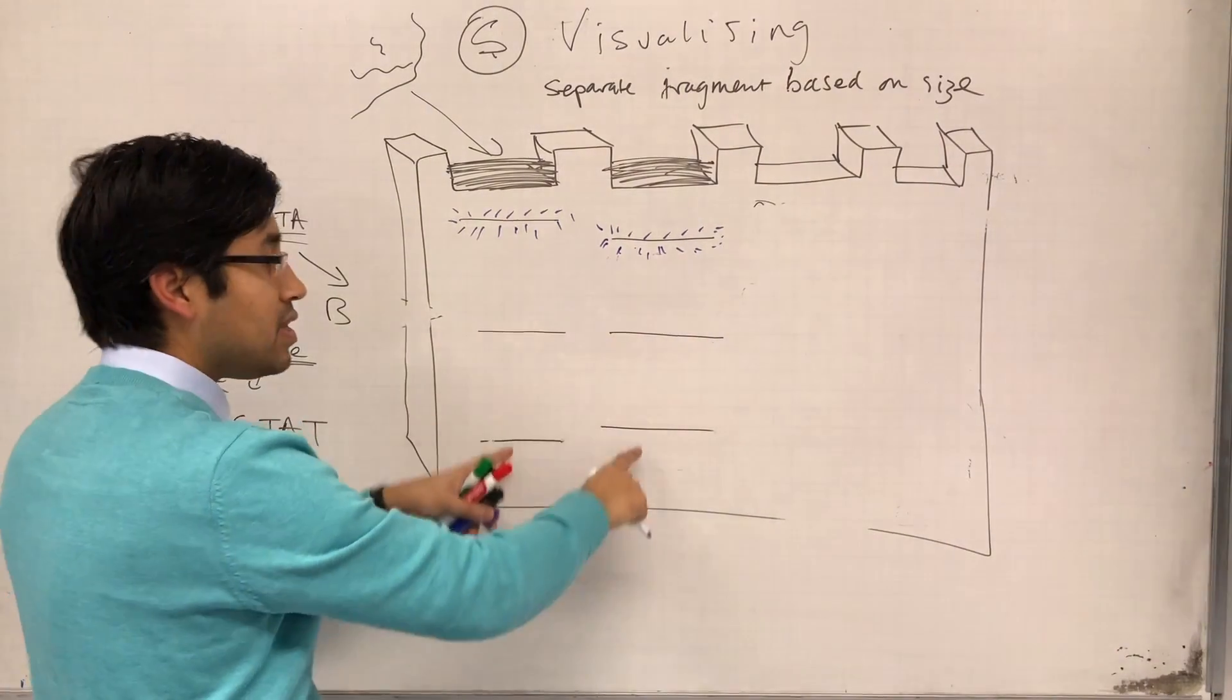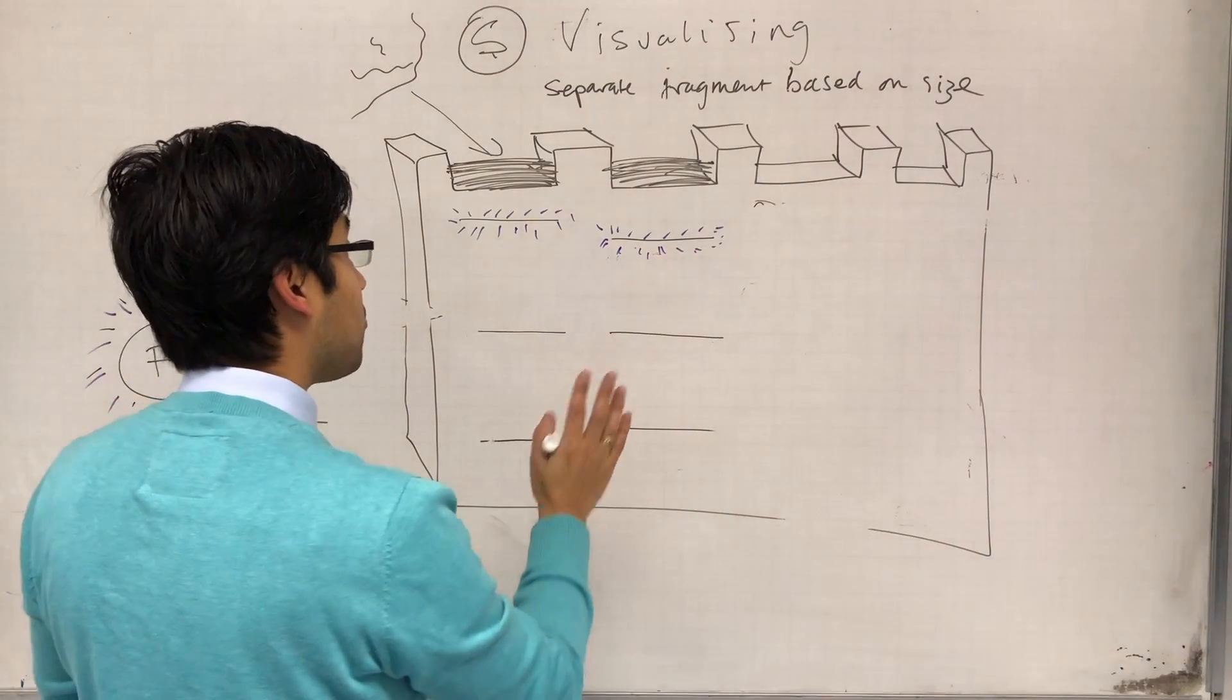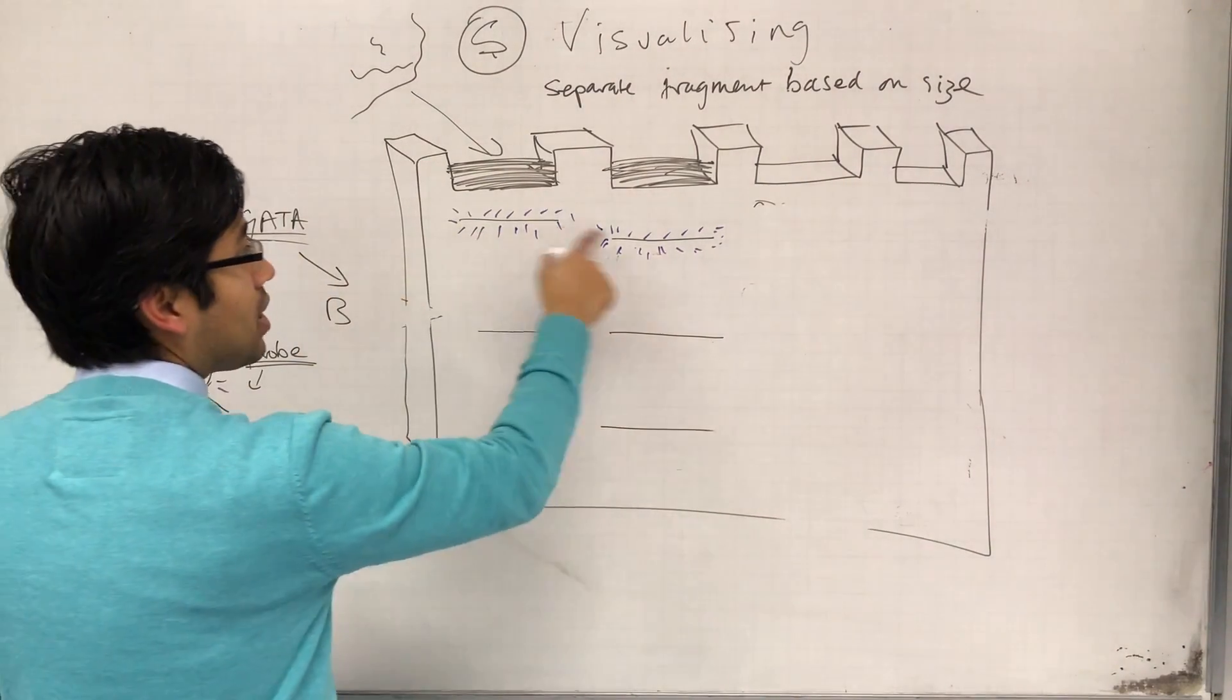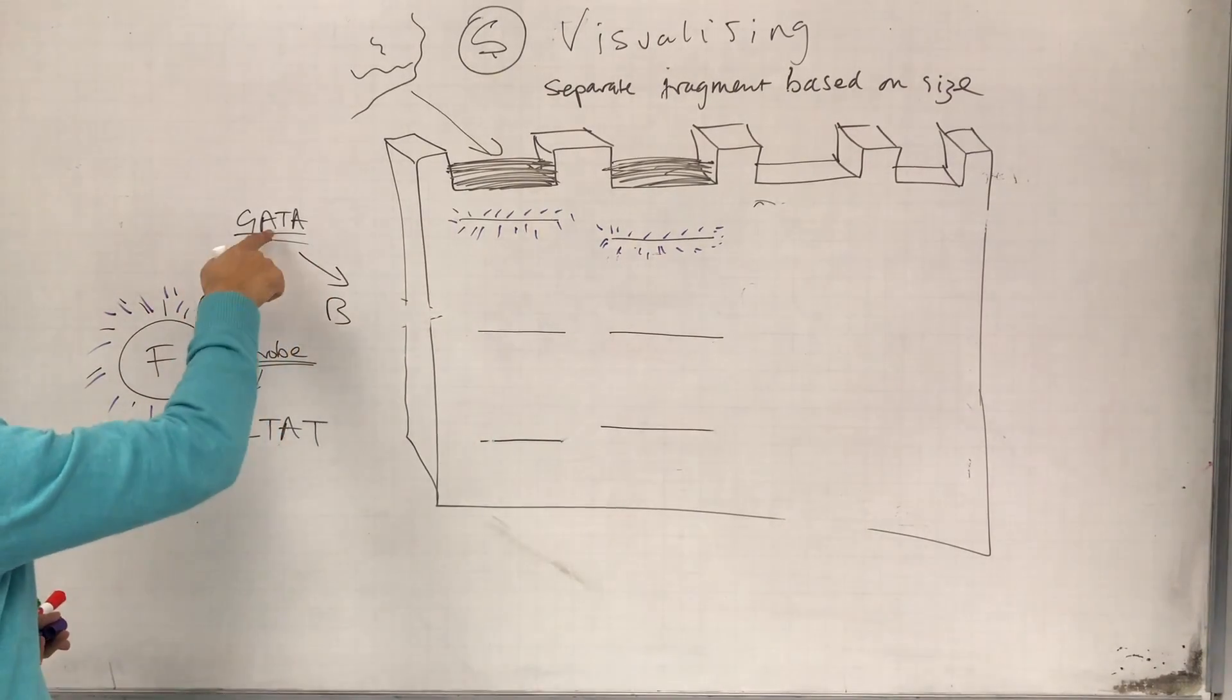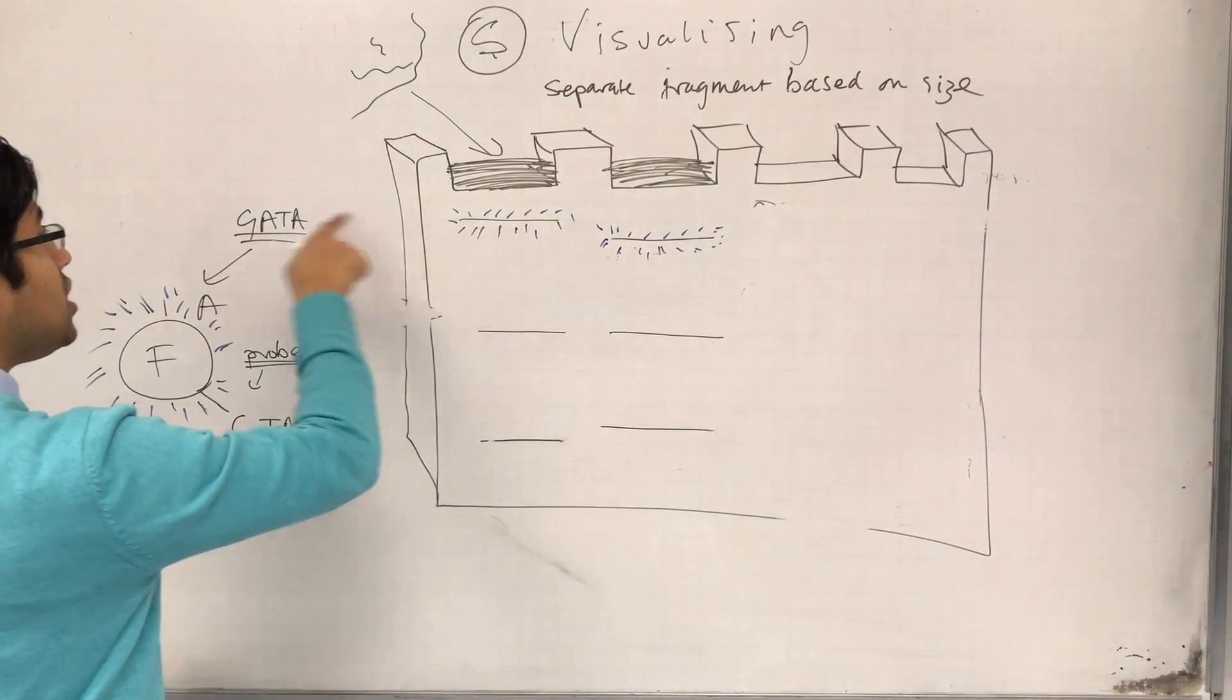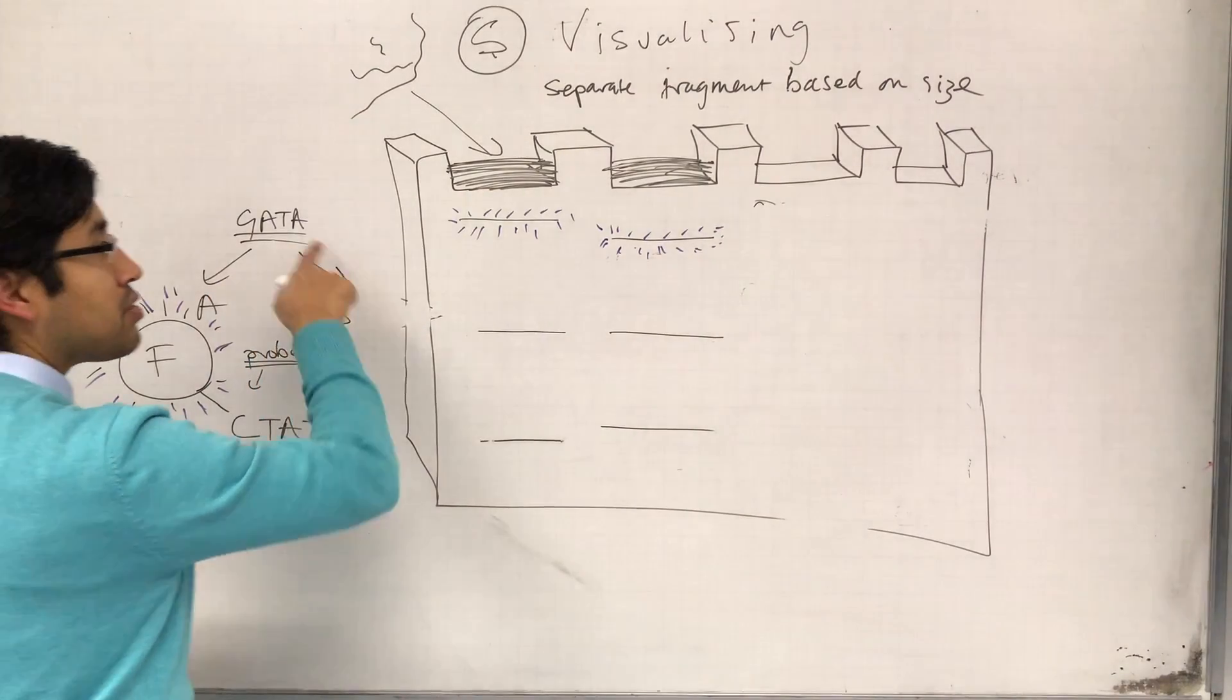Will I be able to see these bands? No. Because I'm not probing for them. So I'm getting a signal. And so what I will be able to tell is that actually, person A has got more GATA repeats than person B.